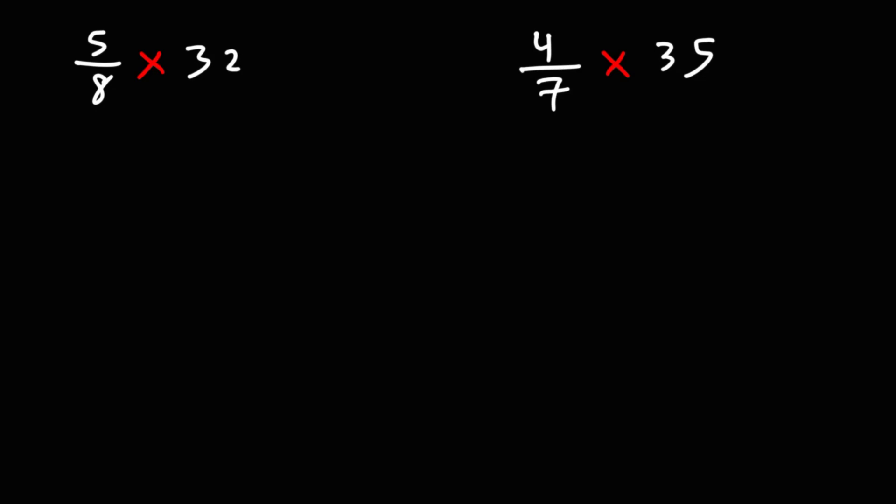In this video, we're going to talk about how to multiply fractions by whole numbers. So what's 5/8 times 32? The first thing you want to do is convert 32 into a fraction. So you can put it over 1 and then multiply across.